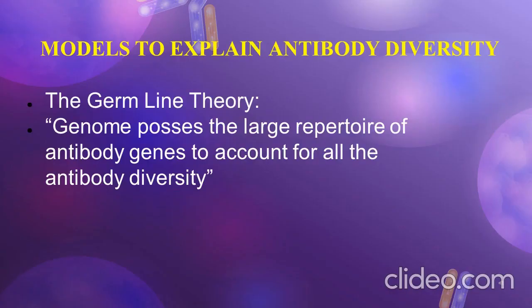There are many theories which try to establish the principle behind diversity of the antibody molecule. The germline theory maintains that the genome contributed by germ cells — egg and sperm — contains a large repertoire of immunoglobulin genes, thus evoking no special genetic mechanism to account for antibody diversity. Proponents argued that the immense survival value of the immune system justified dedicating a significant fraction of the genome to the coding of antibodies.